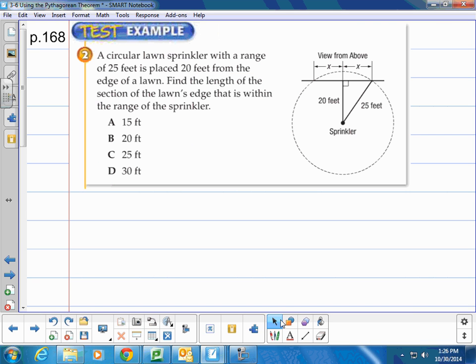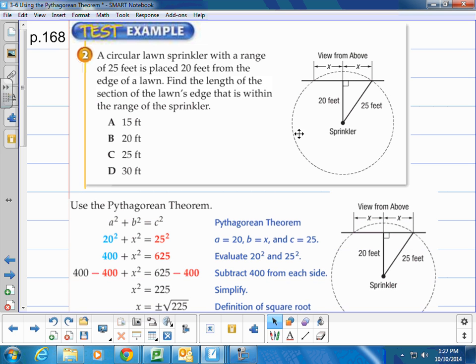This one's a little bit more challenging. A circular lawn sprinkler with a range of 25 feet is placed 20 feet from the edge of a lawn. You're supposed to find the length of the section of the lawn's edge that is within the range of the sprinkler. So the picture here, circular lawn, so we draw a circle, and it's a sprinkler at the center, and it's 20 feet from the edge of the lawn. So here's the lawn, the edge about. So we do this, and then it has a range of 25 feet, so it's going to be able to spray 25 feet away. So we're wondering the length of the lawn that is within the range. So we're looking for x here. And those are our answer values. So we know that it forms a right angle, so we can use Pythagorean theorem.